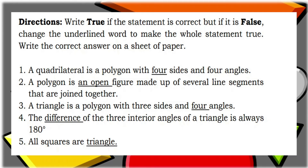Let us have these exercises. Direction: Write true if the statement is correct, but if it is false, change the underlined word to make the whole statement true. Write the correct answer on a sheet of paper. Number one: A quadrilateral is a polygon with four sides and four angles. The underlined word is 'four.' That is true.